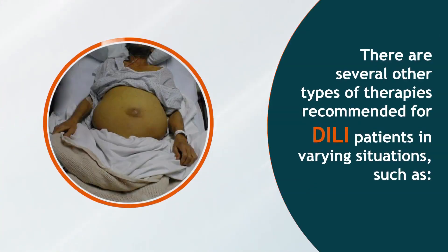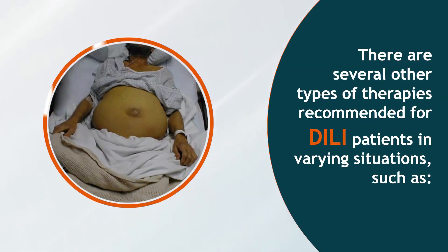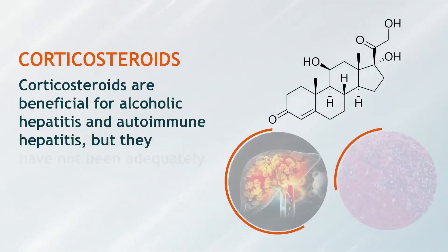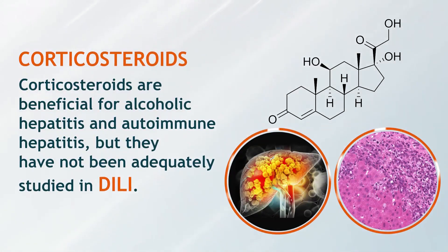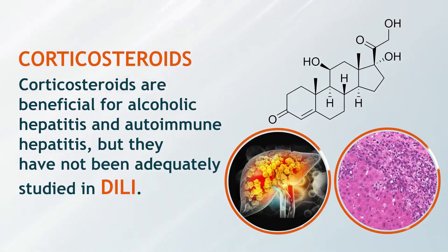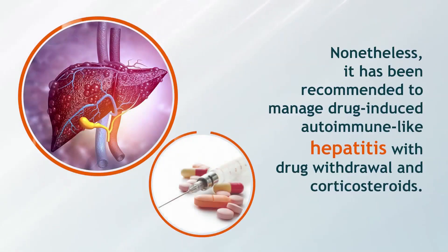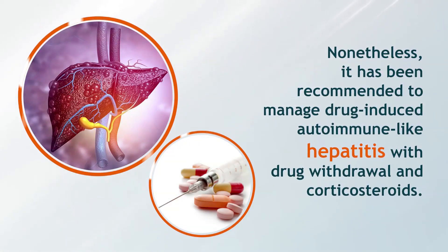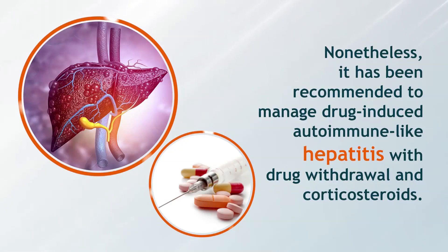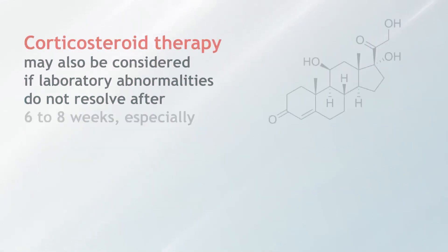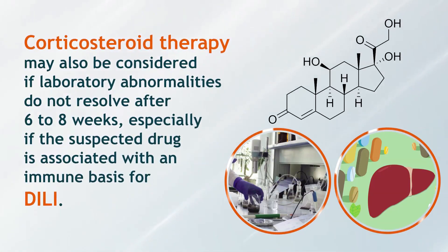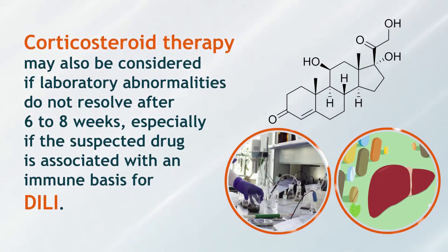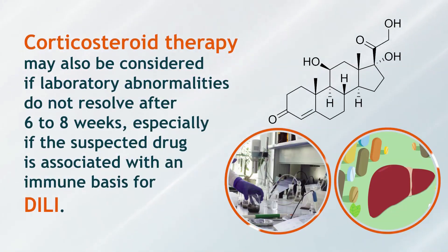There are several other types of therapies recommended for DILI patients in varying situations, such as corticosteroids. Corticosteroids are beneficial for alcoholic hepatitis and autoimmune hepatitis, but they have not been adequately studied in DILI. Nonetheless, it has been recommended to manage drug-induced autoimmune-like hepatitis with drug withdrawal and corticosteroids. Corticosteroid therapy may also be considered if laboratory abnormalities do not resolve after 6-8 weeks, especially if the suspected drug is associated with an immune-mediated basis for DILI.